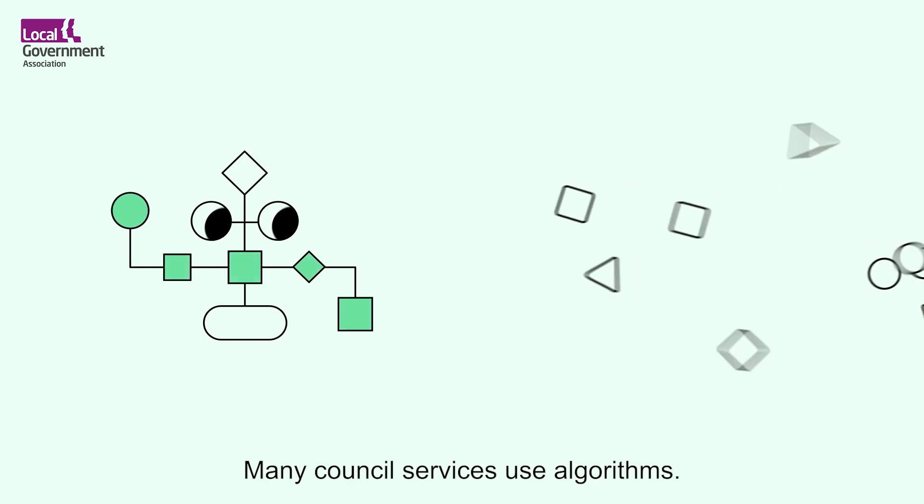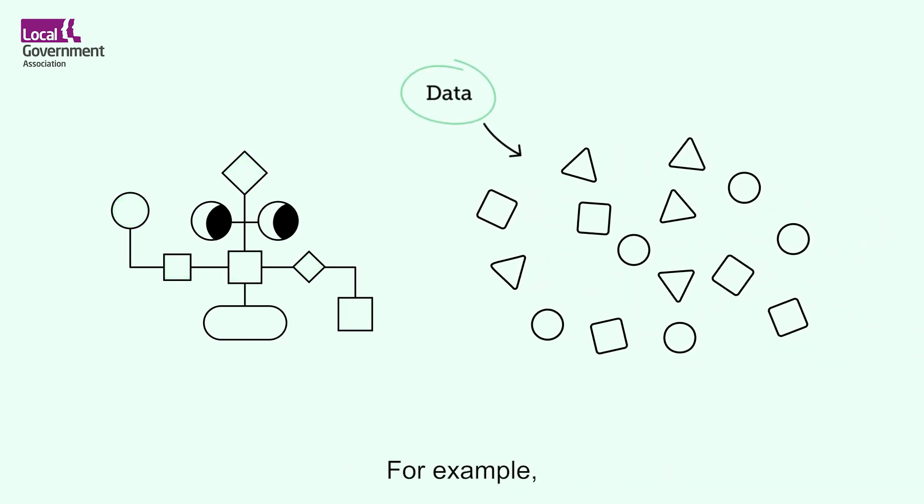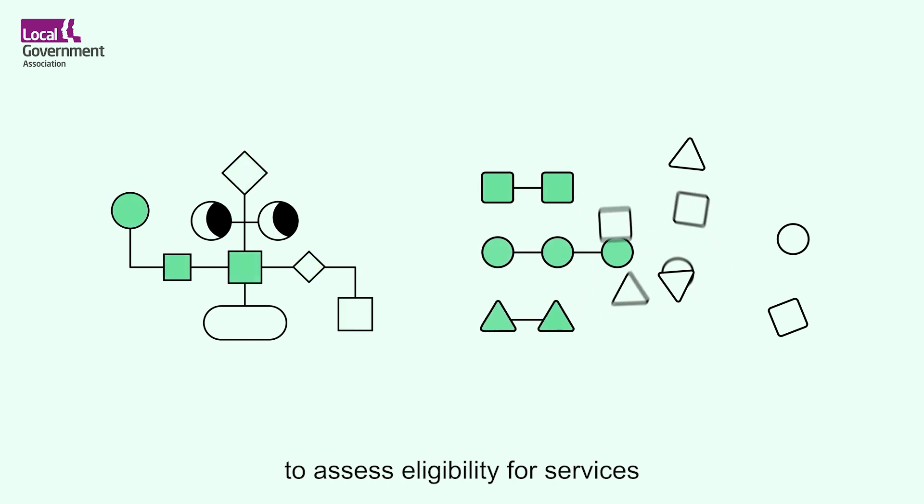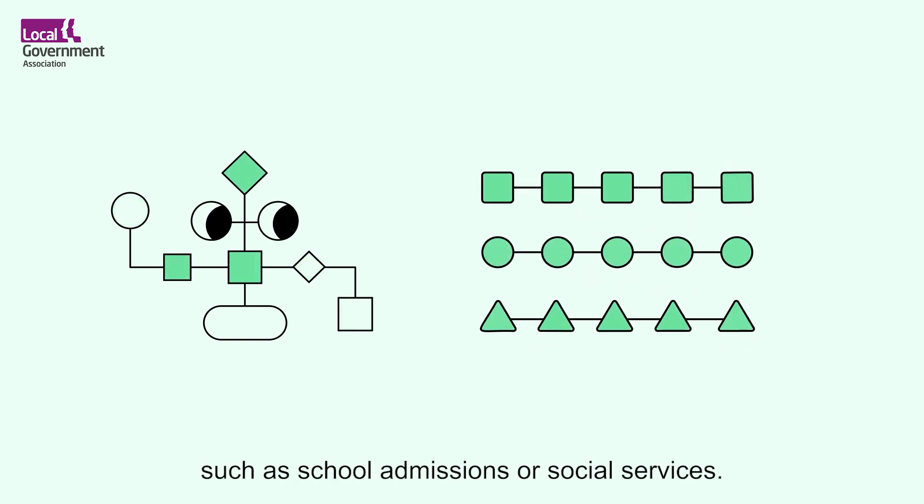Many council services use algorithms. For example, they are used to manage and sort data to assess eligibility for services such as school admissions or social services.